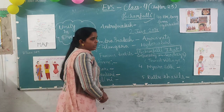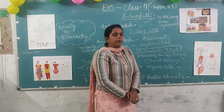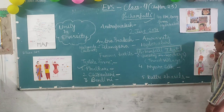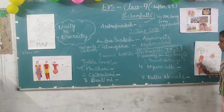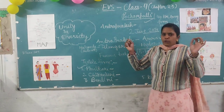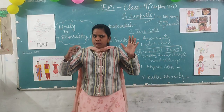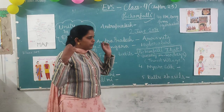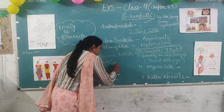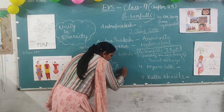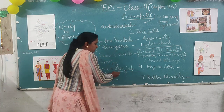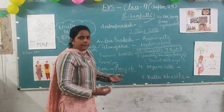First is Phulkari. As you can see, Phulkari is a kind of dupatta. Phulkari is a famous textile form of Punjab.